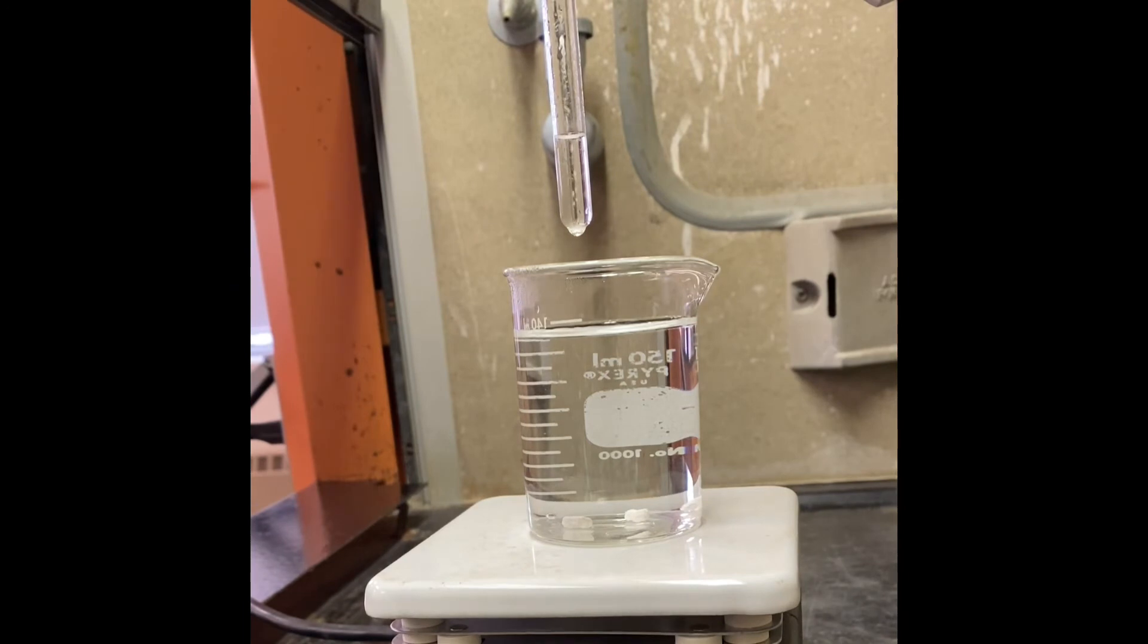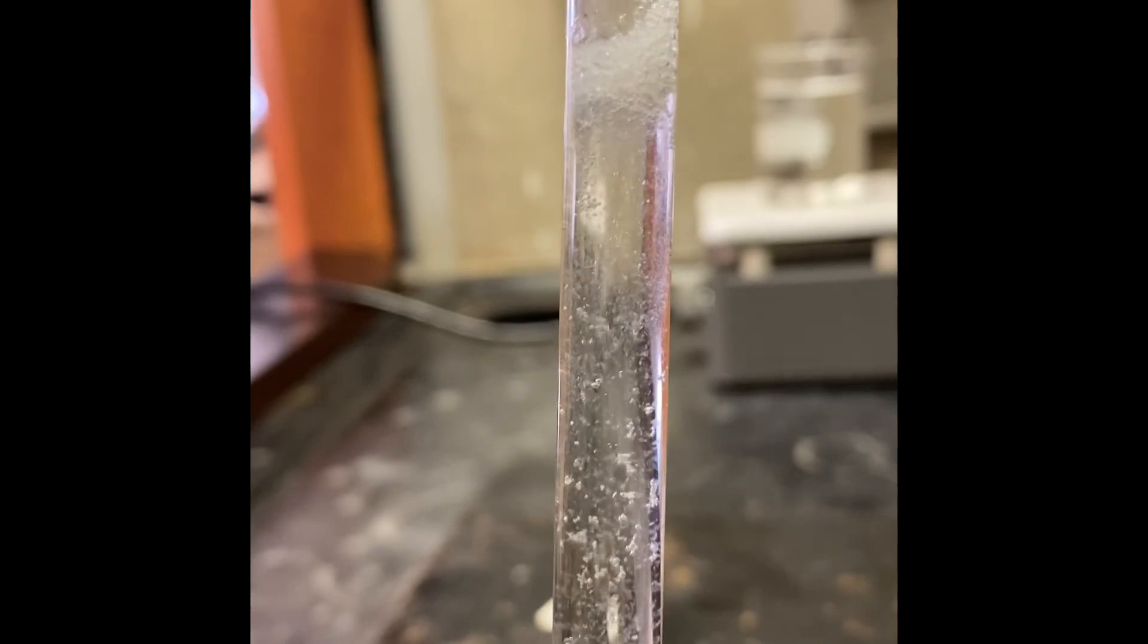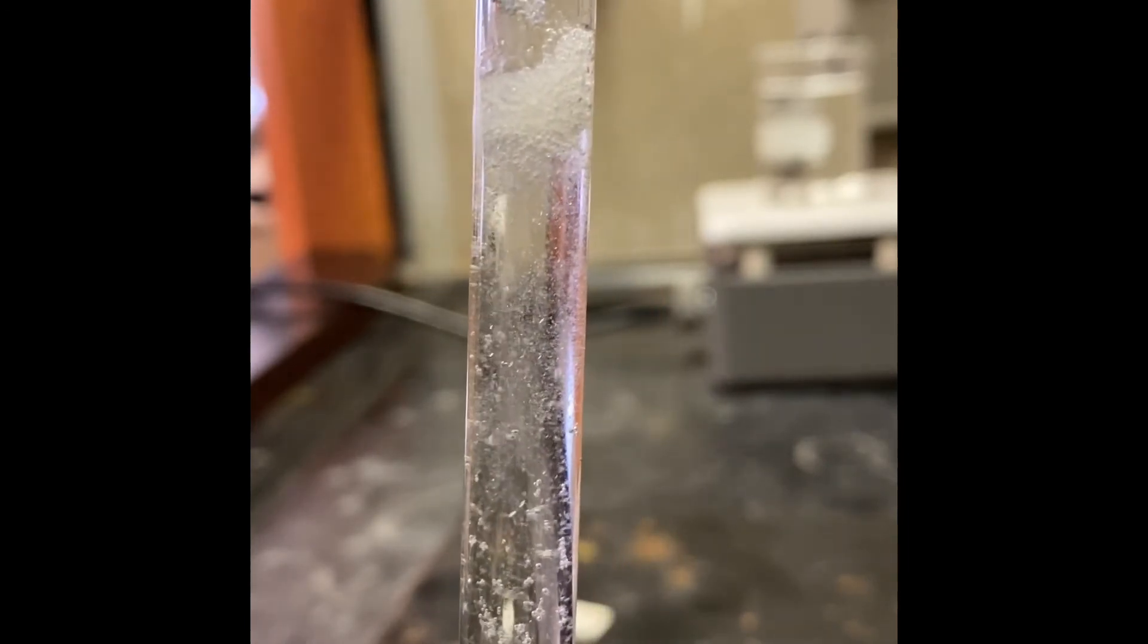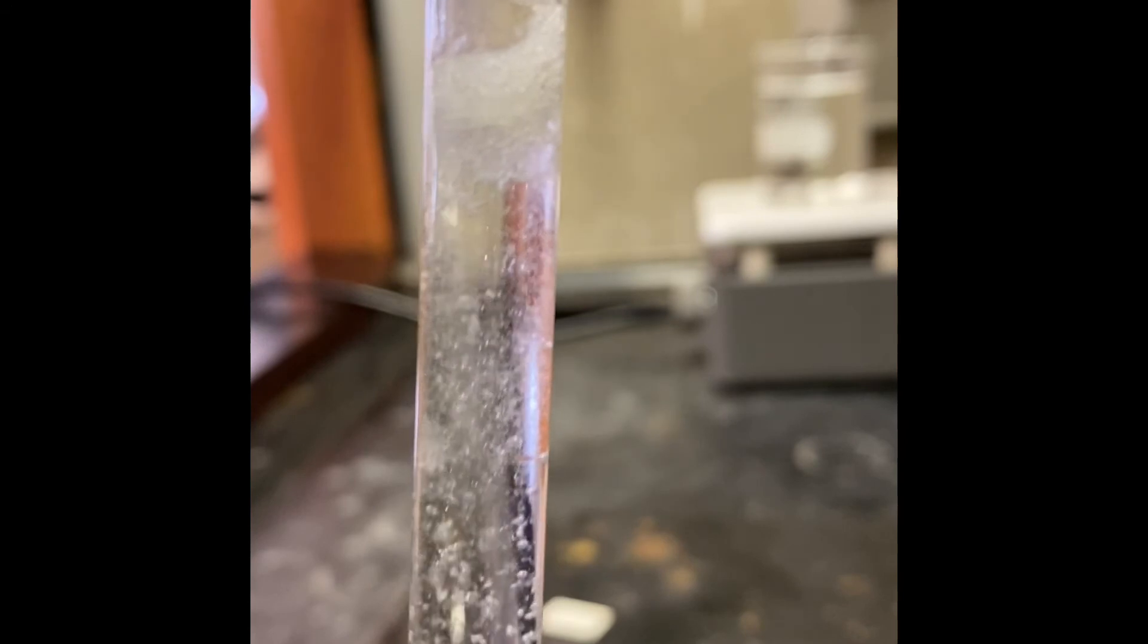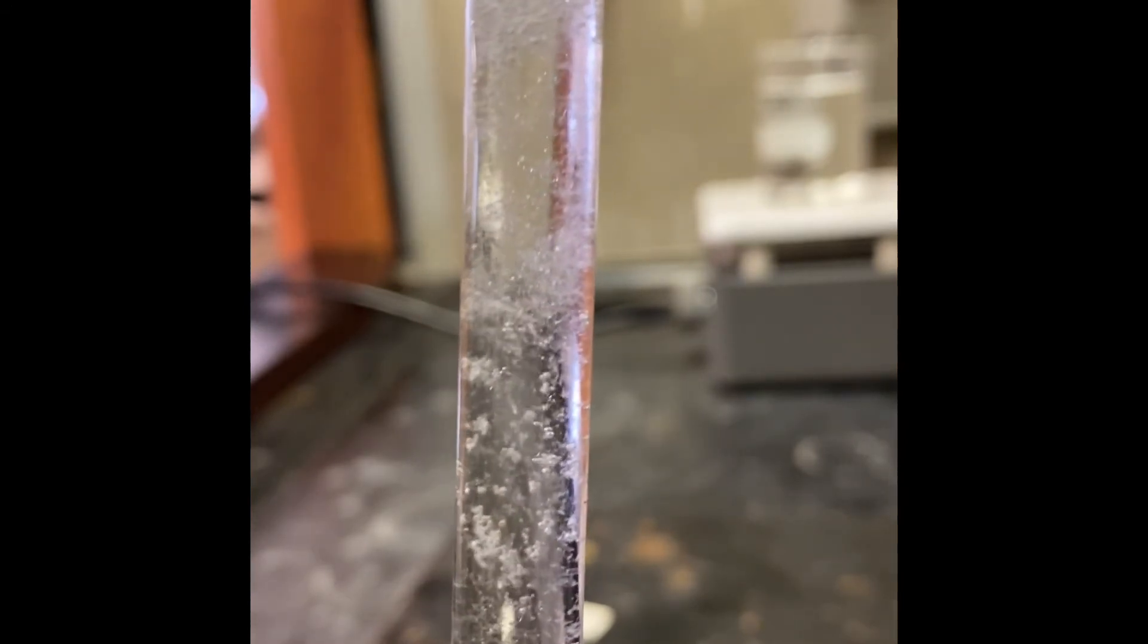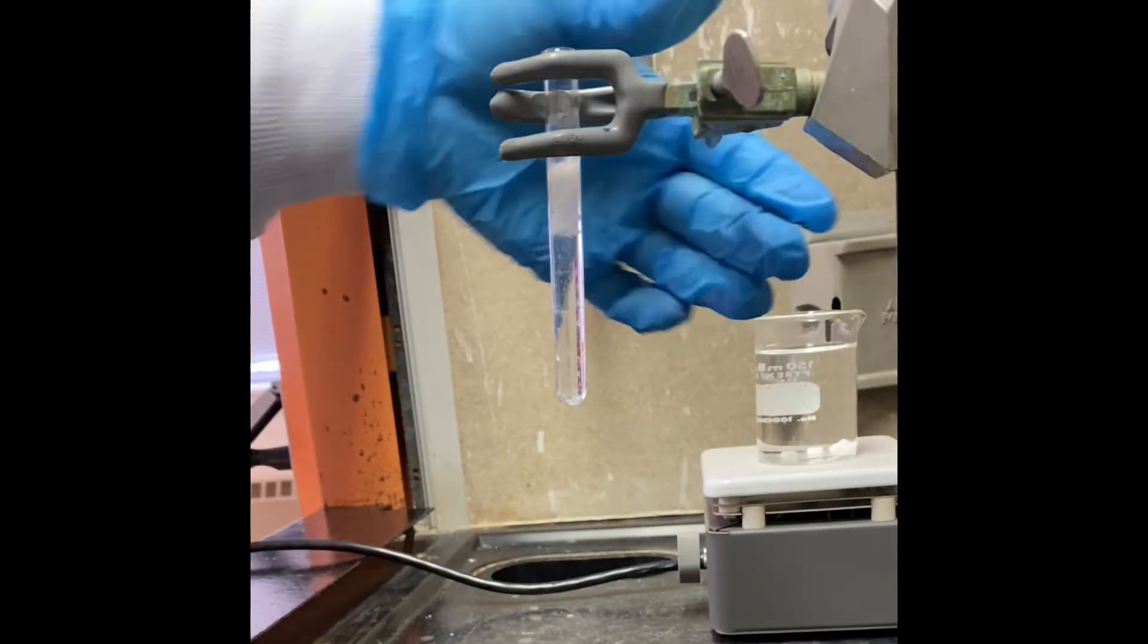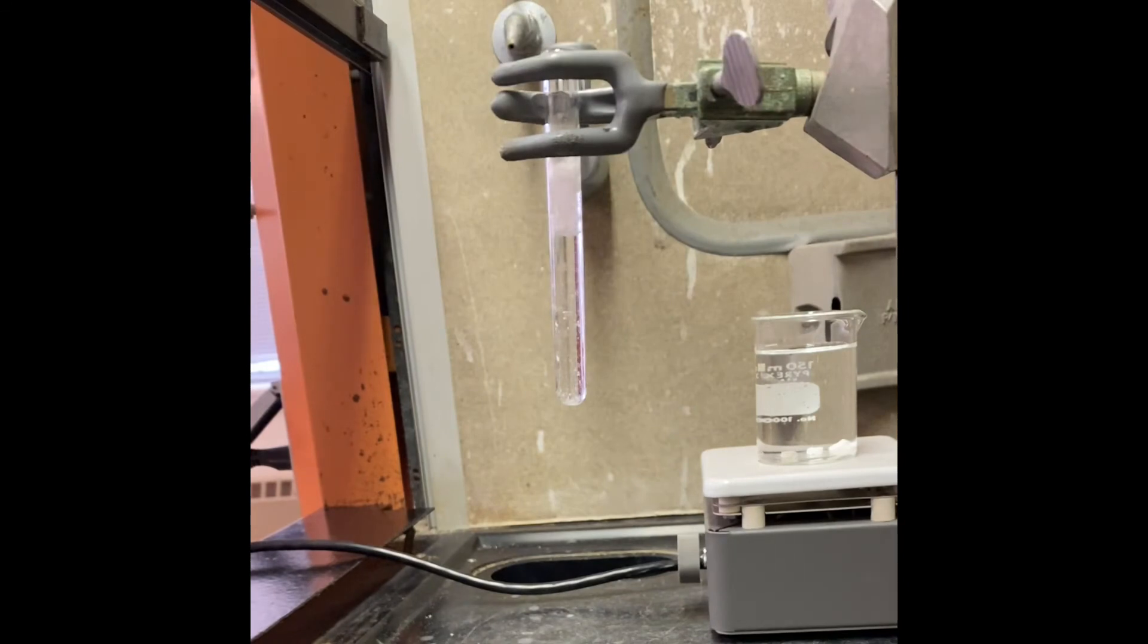After reaching the boiling point, we'll add some water until we get a cloudy reaction mixture. So slowly we're going to add water drop by drop. After adding water until getting a little cloudy, as you see, our product starts to form. That's how our reaction looks like now.